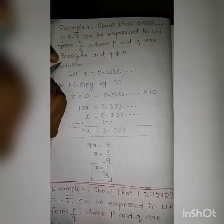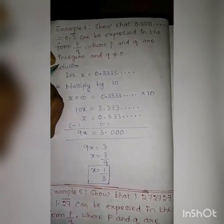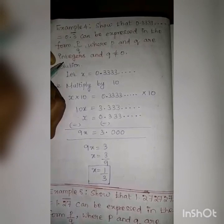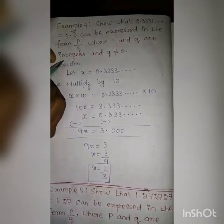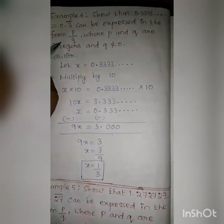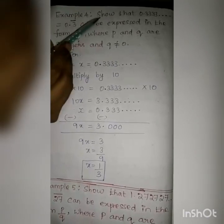Hello students, today we have to discuss about how to write the decimal form in rational number. Let us see example 4.